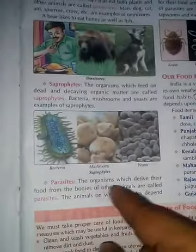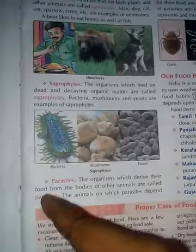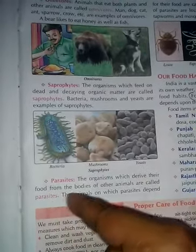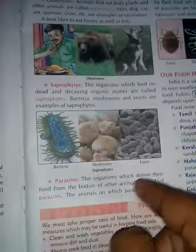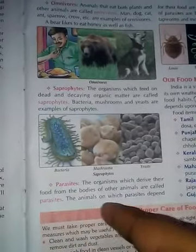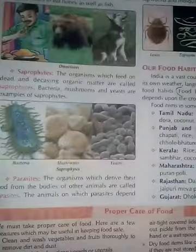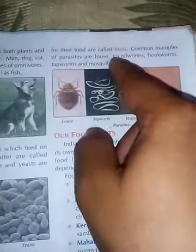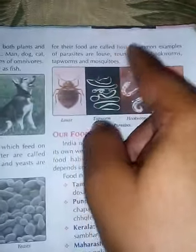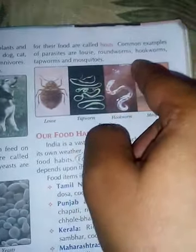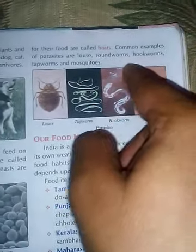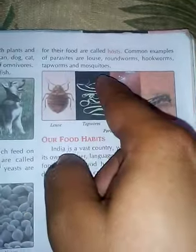Parasites are organisms which derive their food from the bodies of other animals. The animals on which parasites depend are called their hosts. Common examples of parasites are lice, roundworms, hookworms, tapeworms, and mosquitoes.